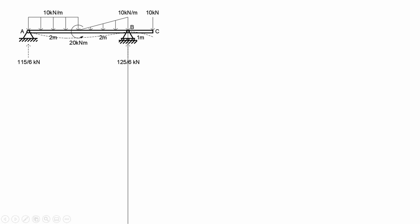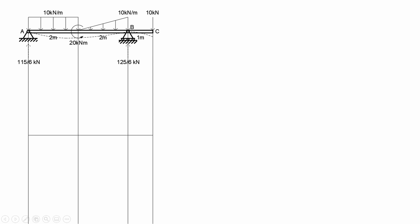The idea is that if the load will cause the beam to deflect upward, it will give you a positive moment. Whereas if the load will cause the beam to deflect downward, it will give you a negative moment. So let's try drawing the moment diagram by parts beginning from the left.